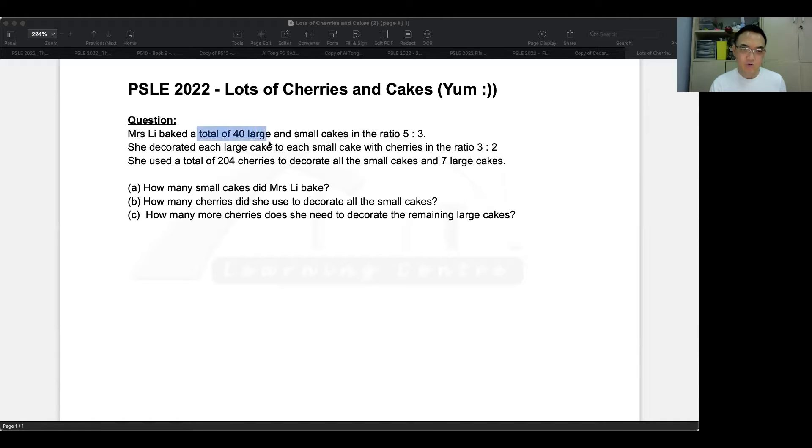First thing, there's a total of 40 large and small cakes in the ratio of five to three, and she decorated each large cake to each small cake with cherries in the ratio of three to two. She then used a total of 204 cherries to decorate all the small cakes and some of them seven large cakes.